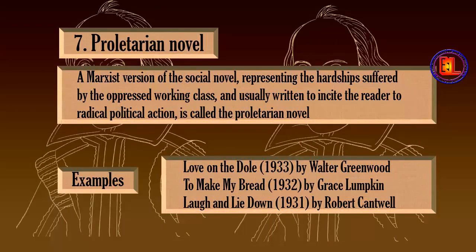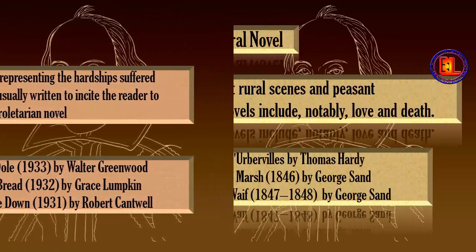Number 7: Proletarian Novel. A Marxist version of the social novel representing the hardship suffered by the oppressed working class and usually written to incite the reader to radical political action. Examples of such novels are Love on the Dole by Walter Greenwood, To Make My Bread by Grace Lumpkin, and Love and Lie Down by Robert Cantwell.